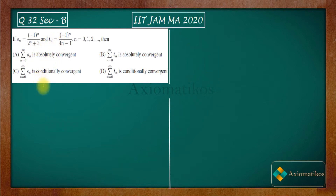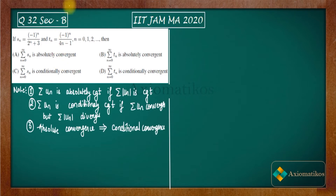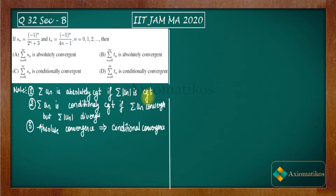I will be showing you a few notes regarding this, then we will be able to clear everything we have to do. I have written three notes for you and that will be sufficient to solve this question. Note number one tells us that summation Un is absolutely convergent if summation mod Un is convergent. This is the definition for the absolute convergence of a series.